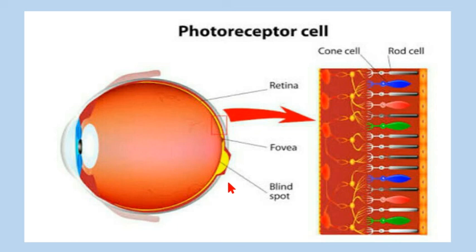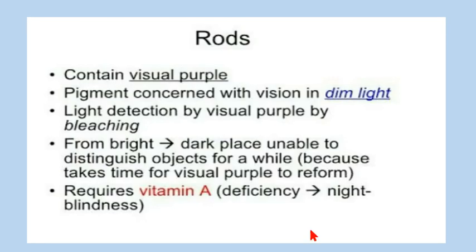The blind spot is the portion of the eye where the retina converts images into electrical signals and sends them to the brain by means of the optic nerve. Where the optic nerve leaves the eye and moves to the brain, that portion is called the blind spot — no photoreceptors are present there, which is why it is called the blind spot.